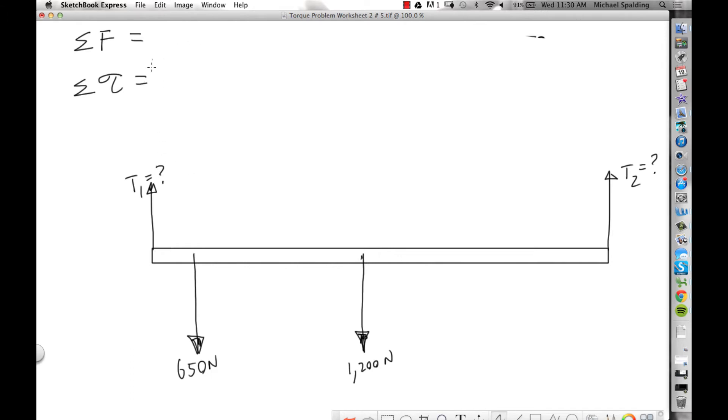And then once we have those two equations, the rest is just algebra. Summing the forces, the sign convention for forces: up is plus, down is minus. For the forces we're gonna have T1 plus T2, they're both pointing up so they're both positive, and then minus 650, then minus 1200. Sum of the forces always equals ma. Is this plank accelerating? No, that goes to zero, so we'll just set this all equal to zero. So here is one equation.